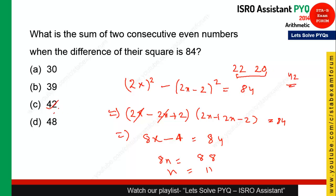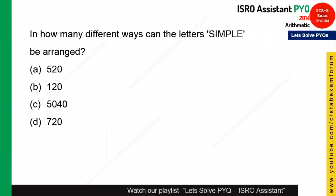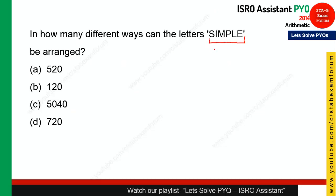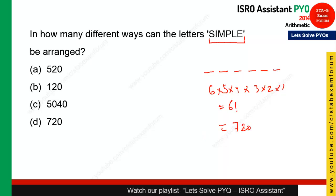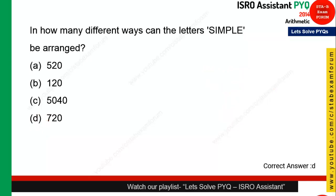Next question — time starts now. It is a very simple question about arrangement of different letters. There are 6 different letters, so there are 6 positions: 6 options for the first, 5 for the second, 4 for the third, 3, 2, and 1 — in other words, 6 factorial, which equals 720. Option D is the right answer.